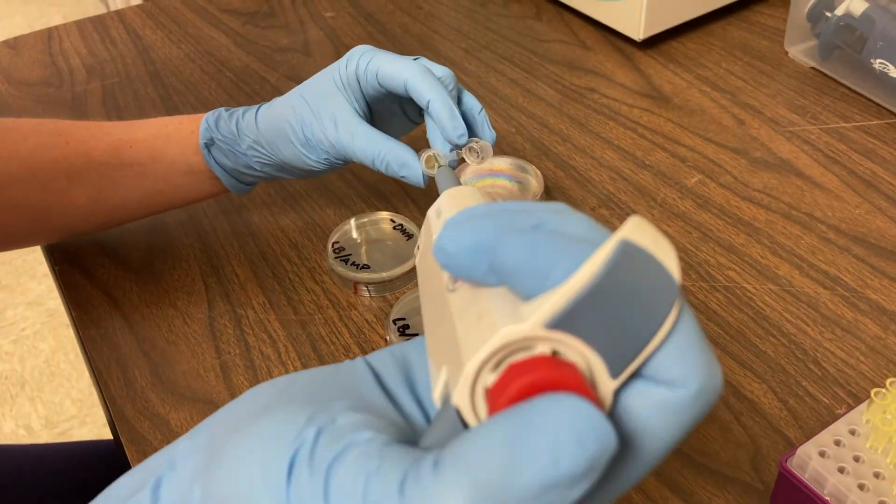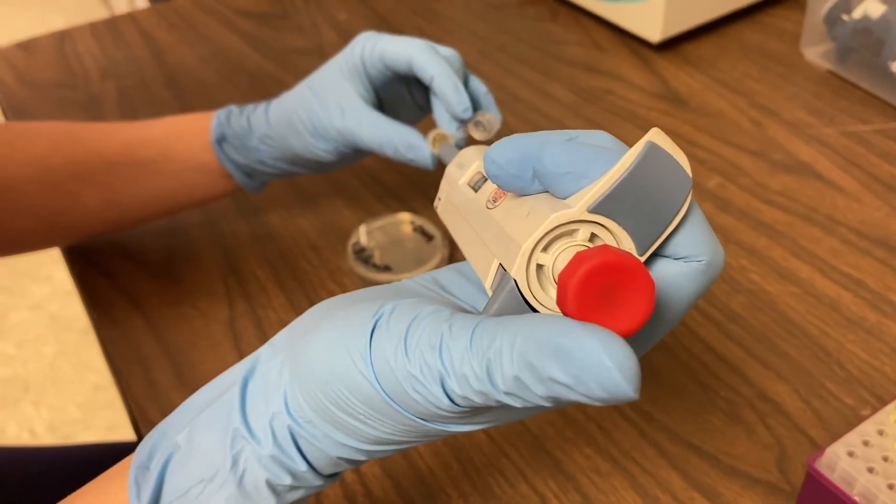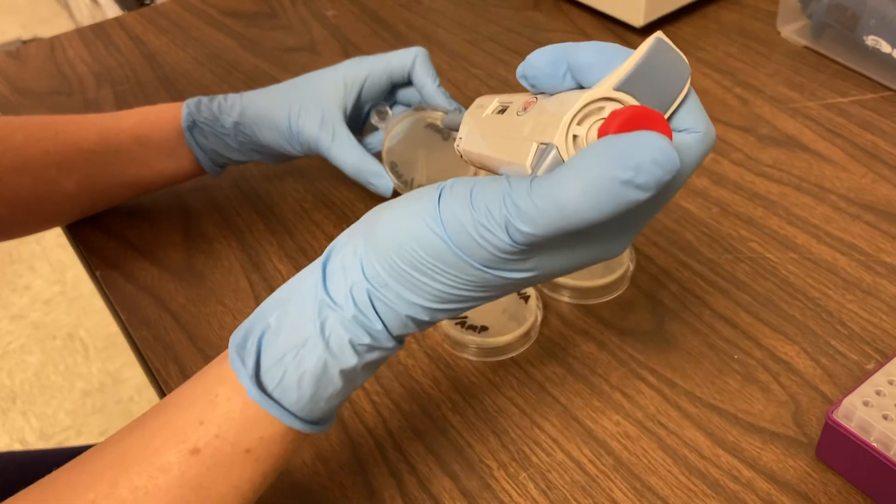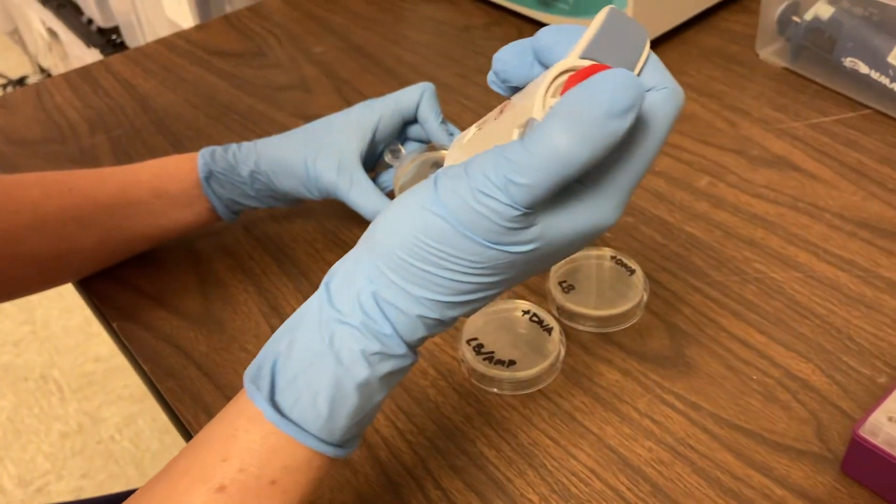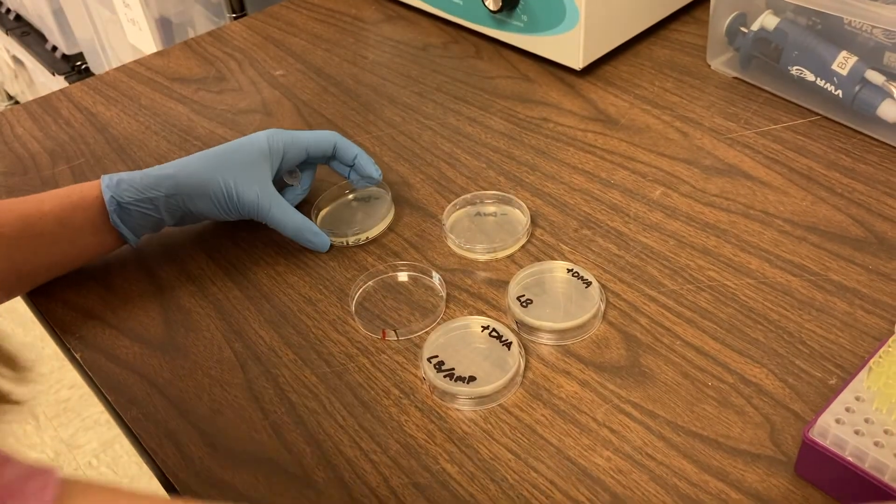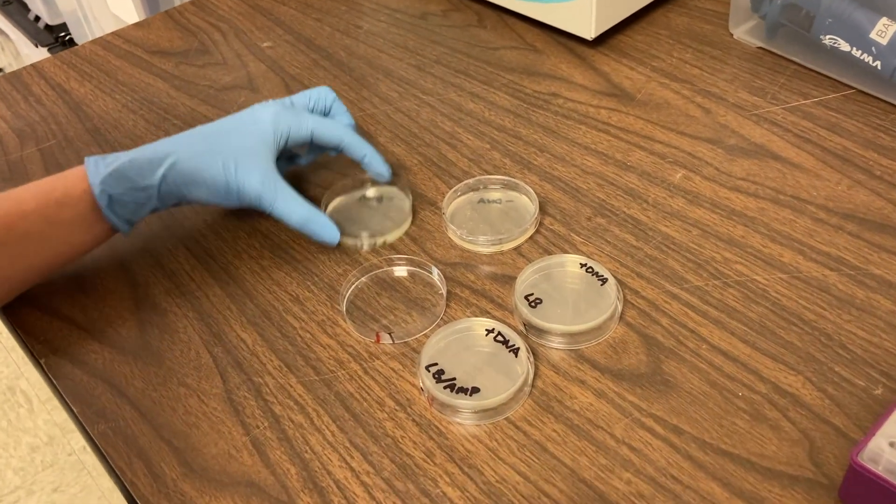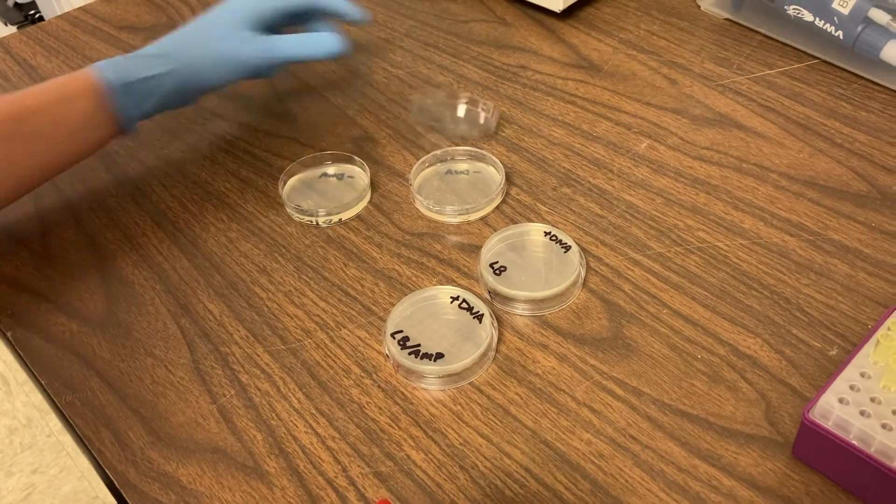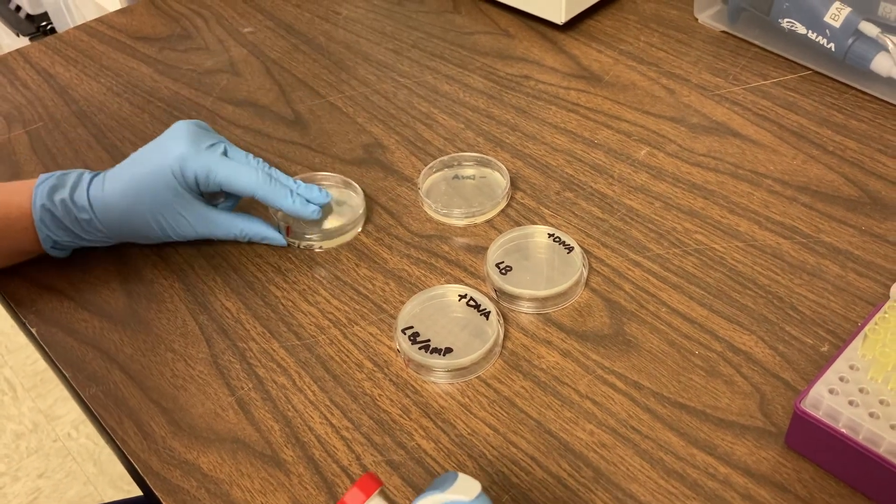For the next plate, we add the minus DNA bacteria to the LB amp agar plate. Now remember, this plate is different than the first because it does have LB in it, but it also contains the antibiotic ampicillin. And that's going to be important for when you're looking at your results.